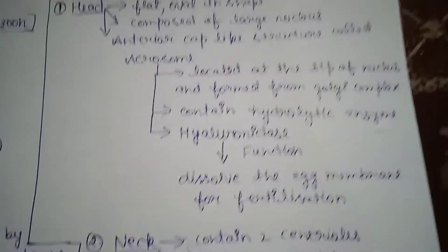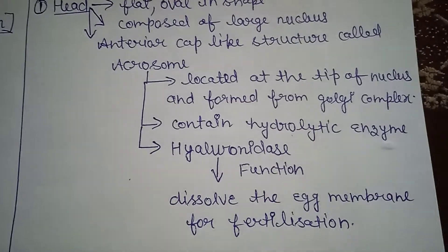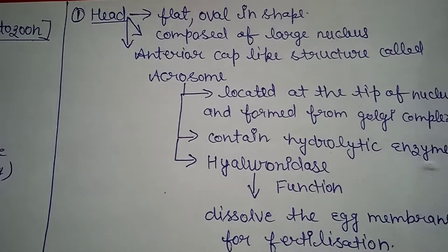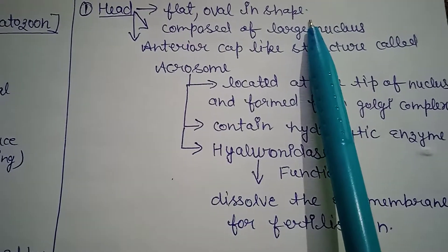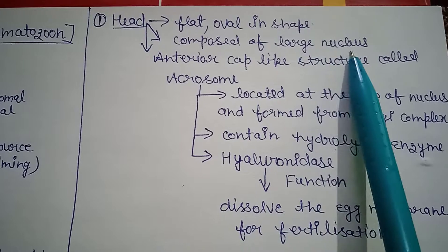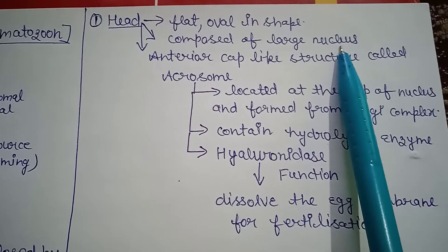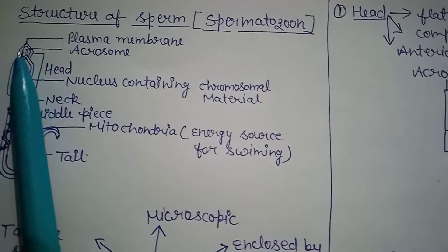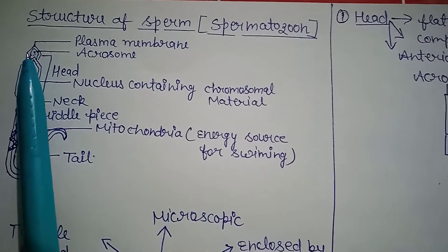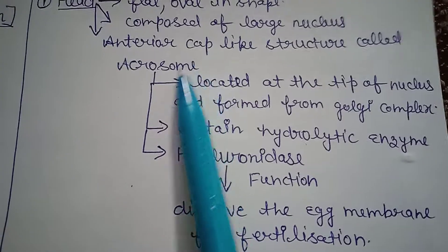First part is head. As you have already seen in the diagram, the head is flat and oval in shape and it is composed of a large nucleus. You can see in this diagram there is a cap-like structure present above the head that is known as acrosome. This is the cap-like structure, it is called acrosome.